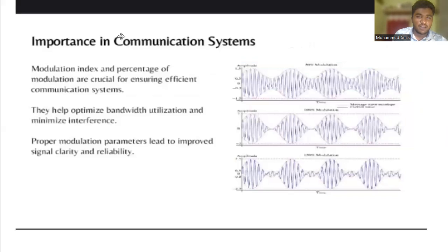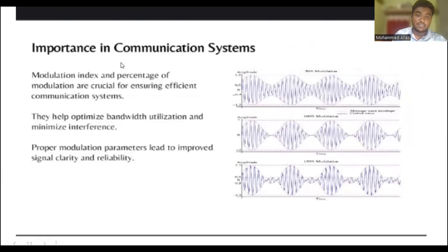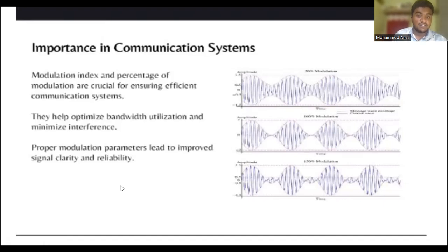Importance in communication systems: modulation index and percentage of modulation are crucial for ensuring efficient communication systems. They help optimize bandwidth utilization and minimize interference. Proper modulation parameters lead to improved signal clarity and reliability.